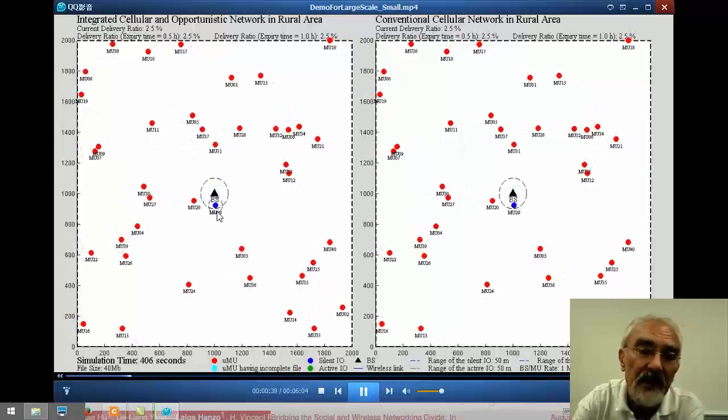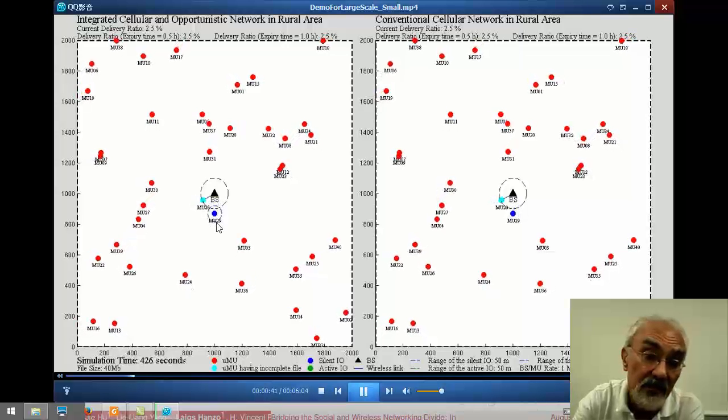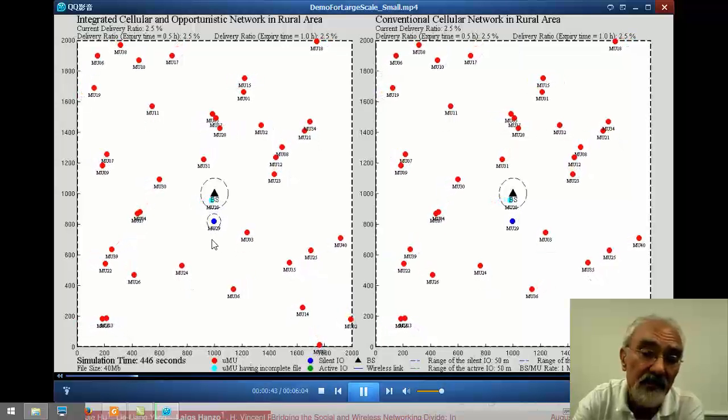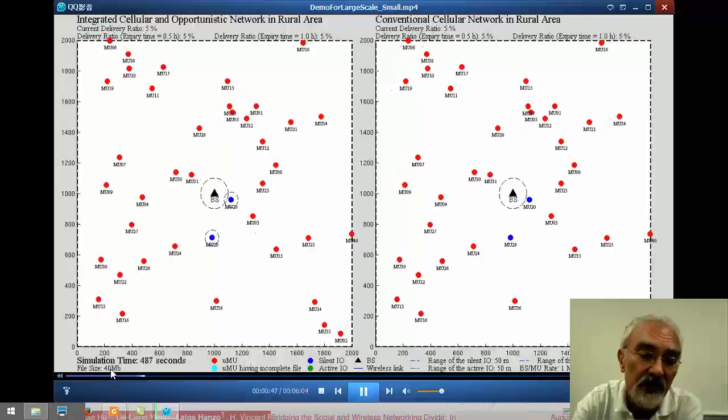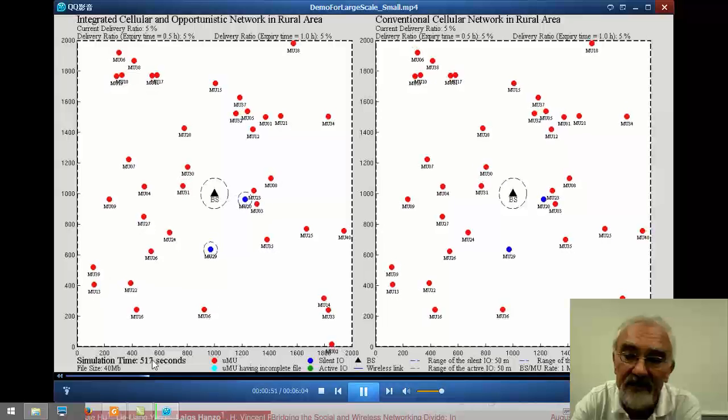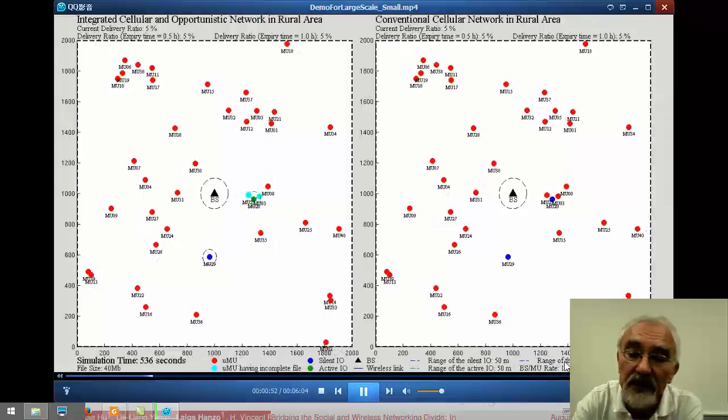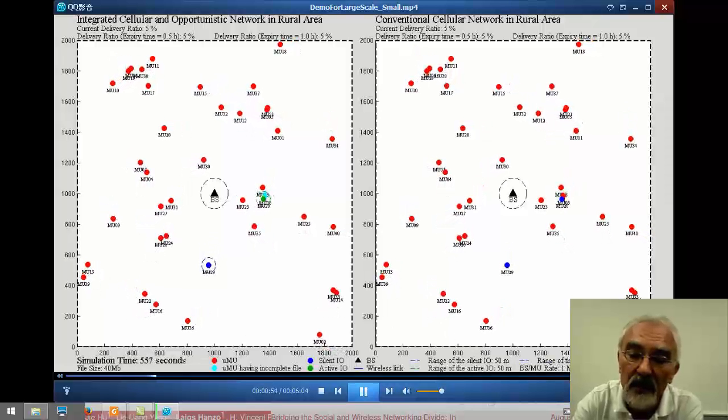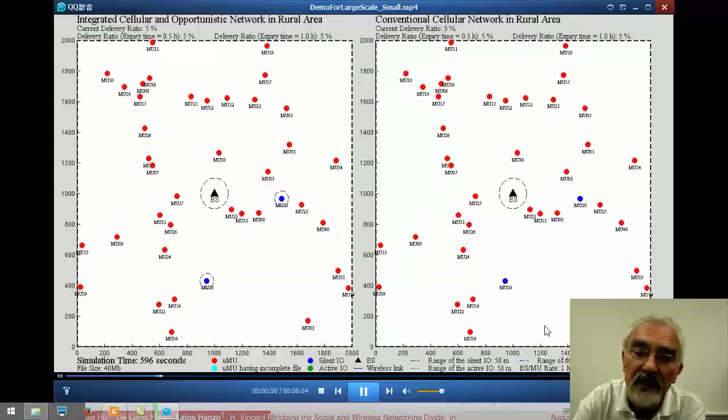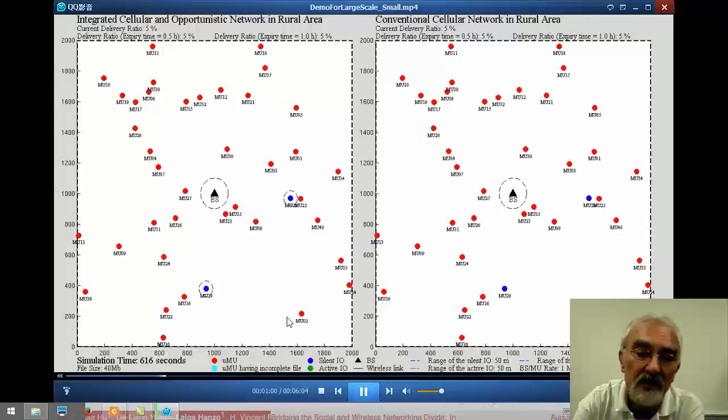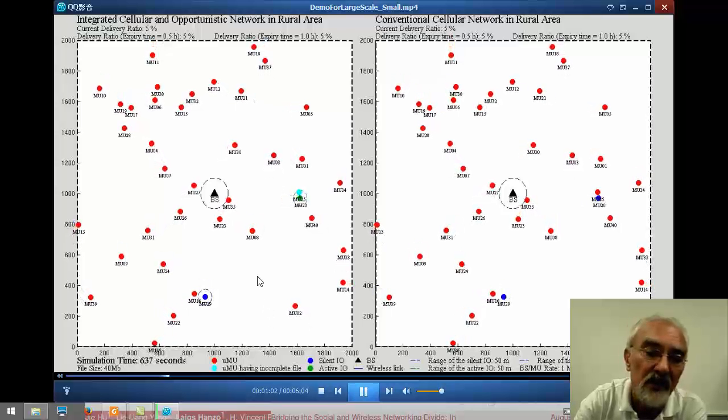And the dot turned dark blue because this mobile succeeded in downloading a file, as you see down at the bottom, of 40 megabytes. The bit rates here in this scenario are 1 megabps or 2 megabps. And so, in theory, that implies that the download takes 40 seconds.